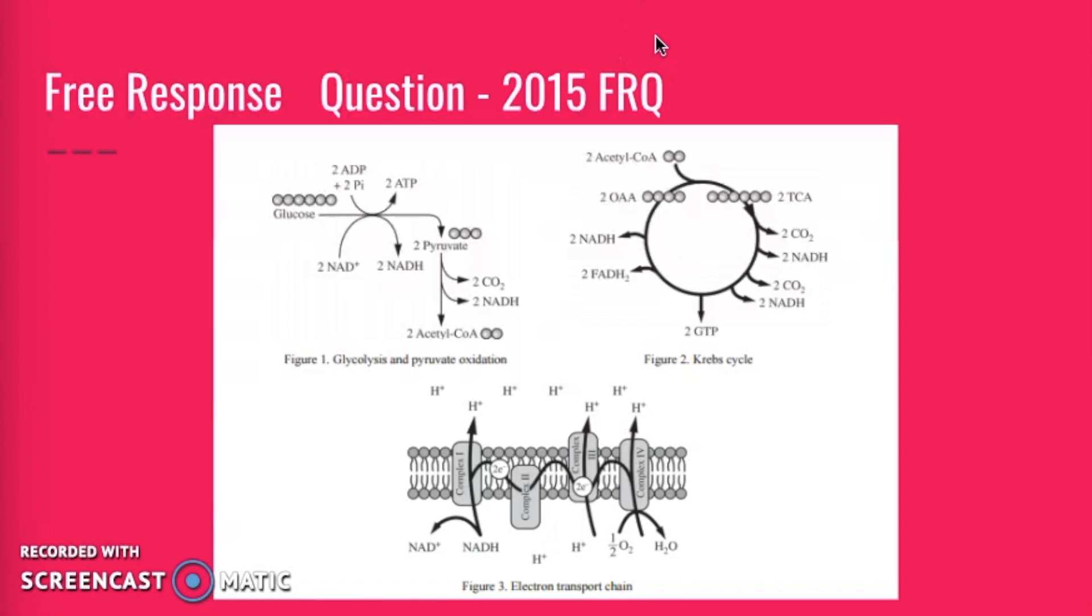If you want to review cellular respiration and all the different parts of it, including glycolysis, the Krebs cycle, and the electron transport chain, I would recommend looking at the 2015 AP Biology FRQ question that references all three of these particular pathways. It's a great way to practice some of the important components of cellular respiration and see what it's like on an AP test.